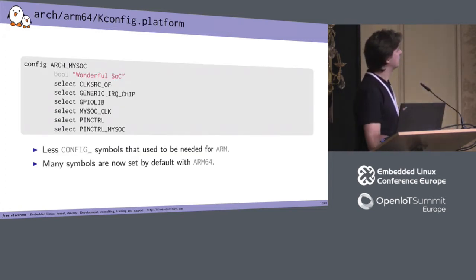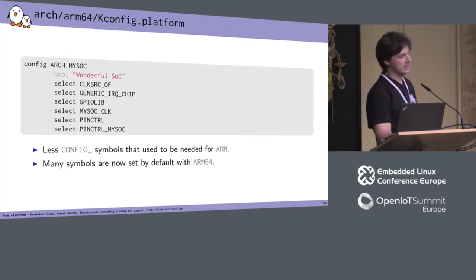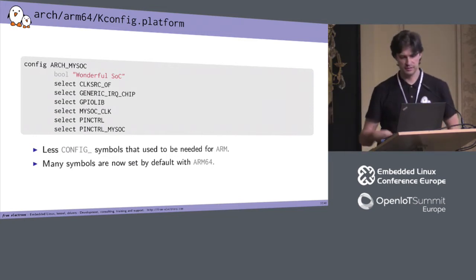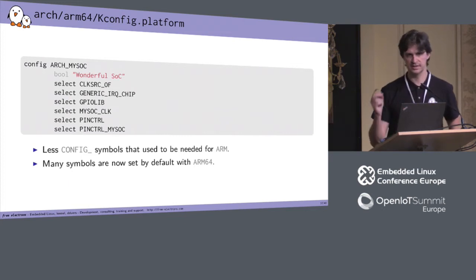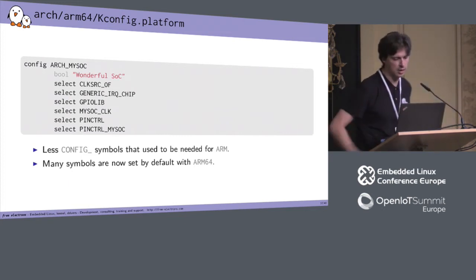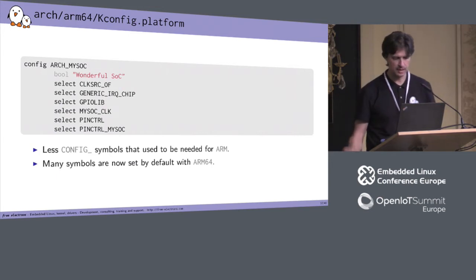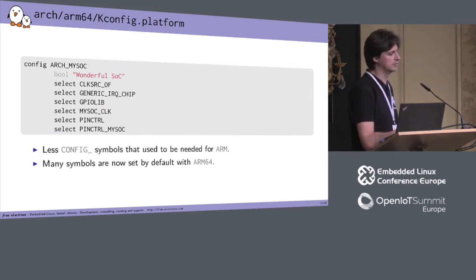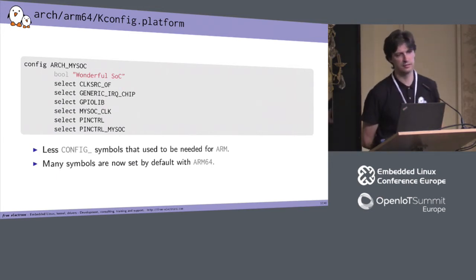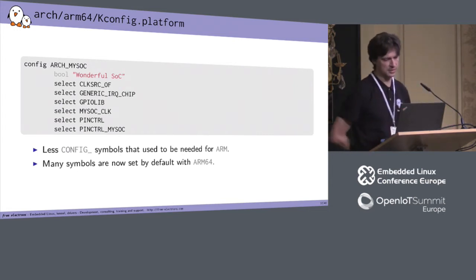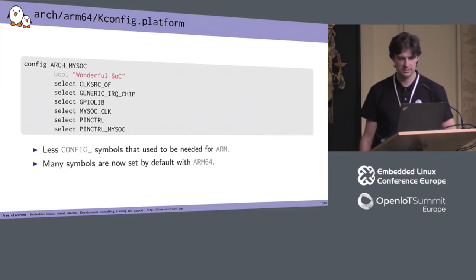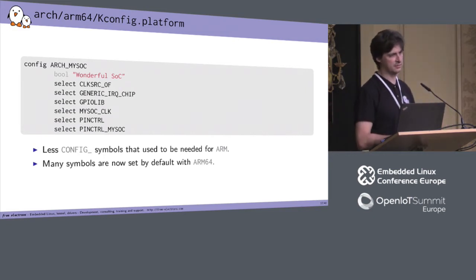Another file you have to modify is the Kconfig platform. It's the place where, when you configure your kernel, you can select support for your SoC. If you compare it to the Kconfig for ARM 32-bit SoCs, there are fewer config symbols, because now many symbols are set by default when you select ARM64.